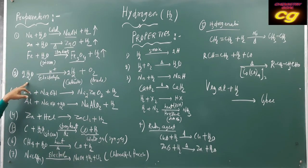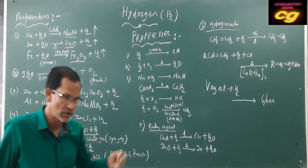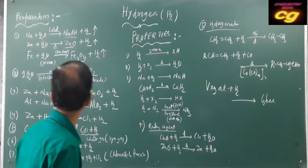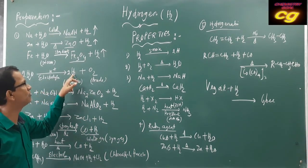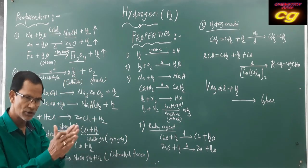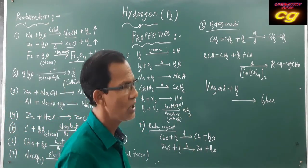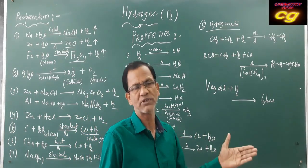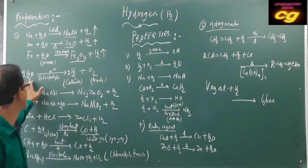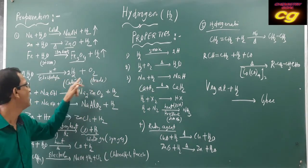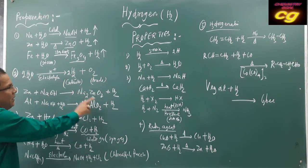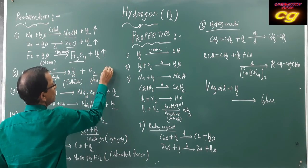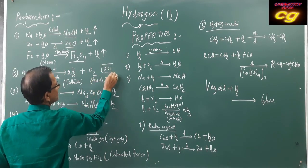Pure water cannot be electrolyzed, but acidulated water — water in the presence of H⁺ — when it undergoes electrolysis, it produces hydrogen gas and oxygen. Water is dissociated into hydrogen and oxygen; this process is called electrolysis. Hydrogen gas is produced at the cathode and oxygen gas is produced at the anode. The volume ratio of hydrogen to oxygen produced is 2:1.